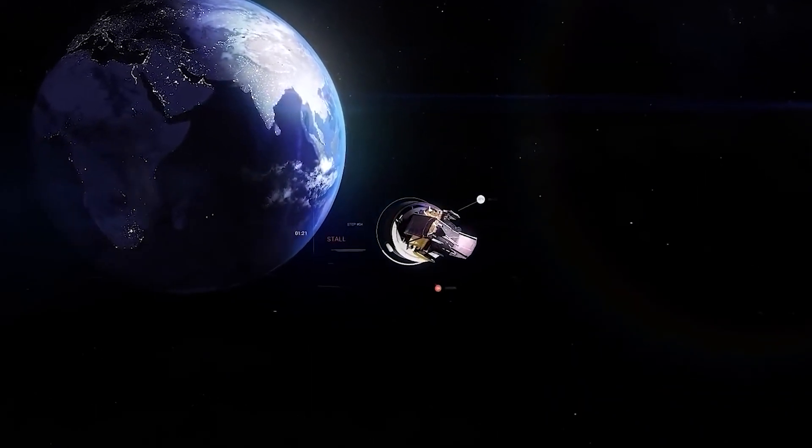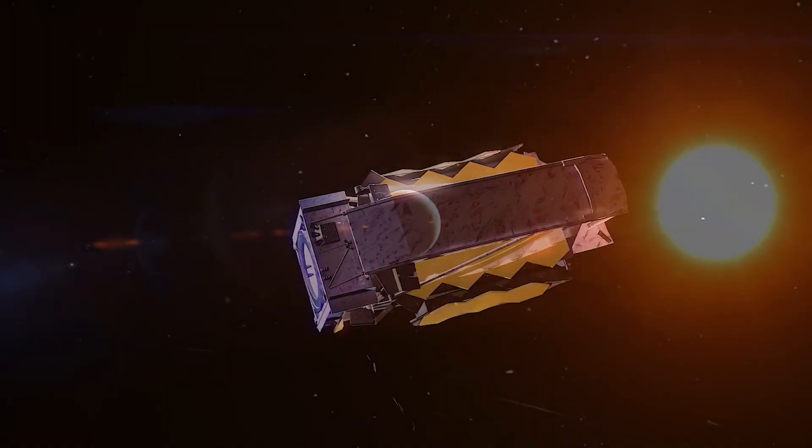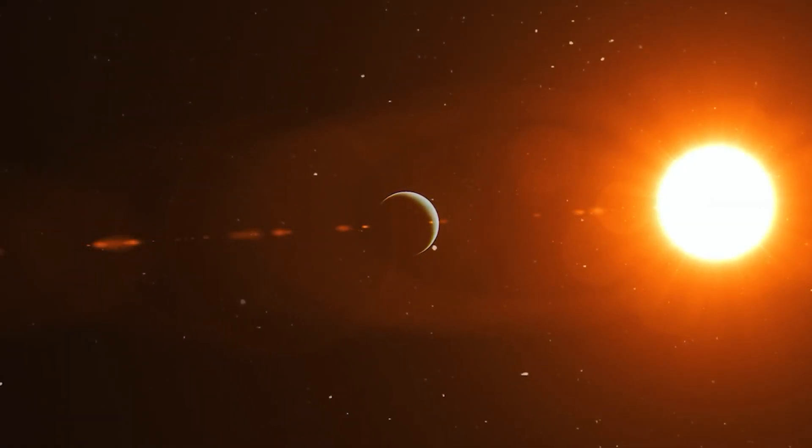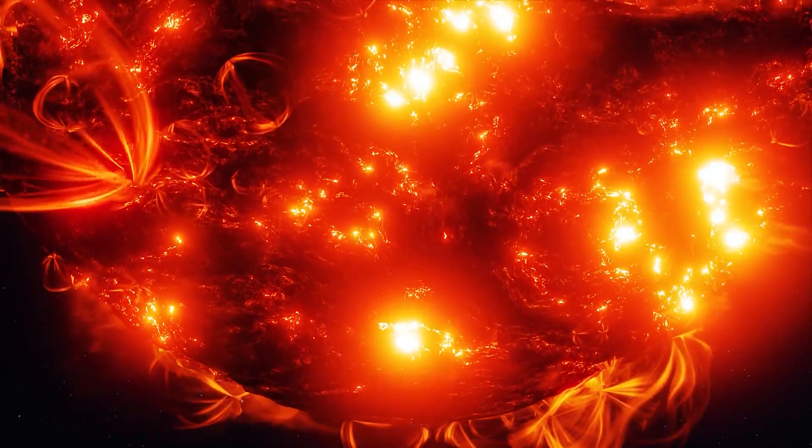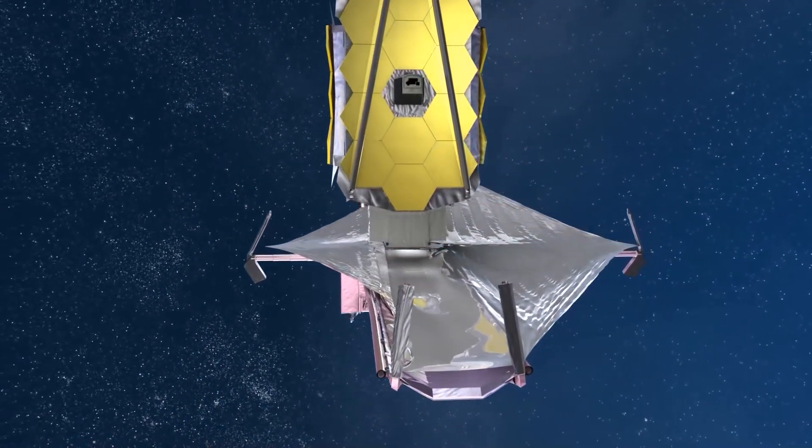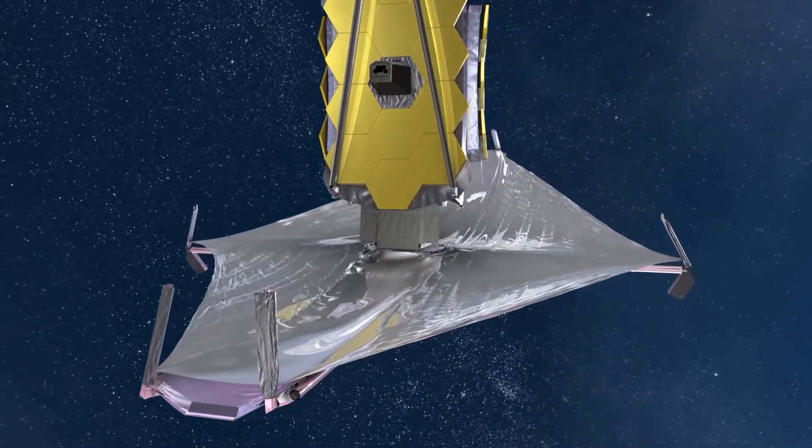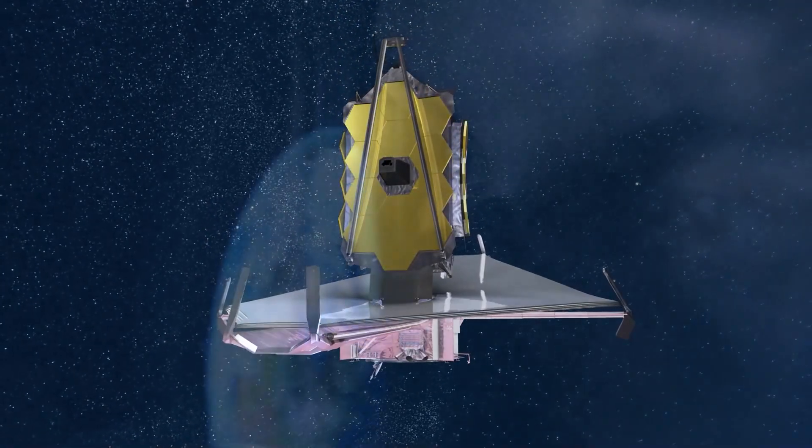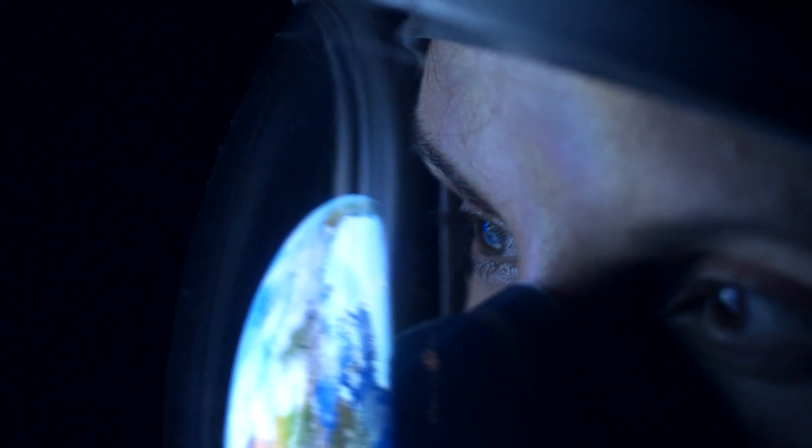JWST travels 1.5 million kilometers from Earth to orbit the Sun around a stable point and has the ability to view objects 100 times fainter as compared to its predecessor. A tennis court-sized sunshield shields its enormous gold-coated primary mirror, which provides never-before-seen views of the universe in infrared light.